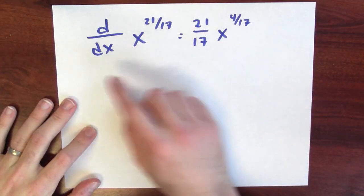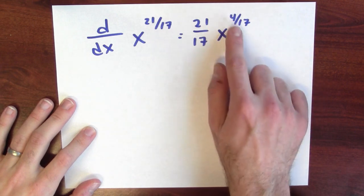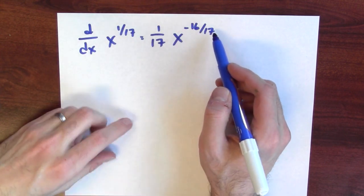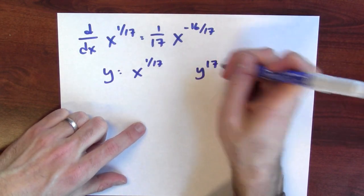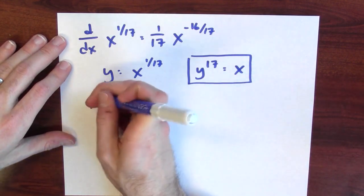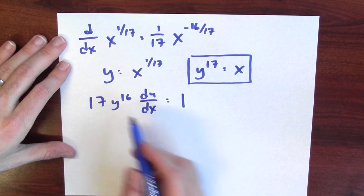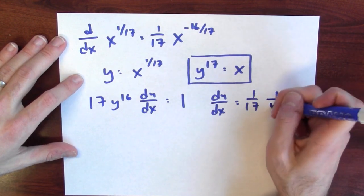But what about rational numbers? How do I know the derivative of x to the 21 over 17th power is 21 over 17 times x to the 4 over 17? Implicit differentiation to the rescue. Let's start with a simpler case: the derivative of x to the 1 over 17. Set y equal to x to the 1 over 17, so y to the 17th power equals x. Differentiating both sides implicitly gives 17 y to the 16th times dy/dx equals 1, so dy/dx equals 1 over 17 times 1 over y to the 16th.